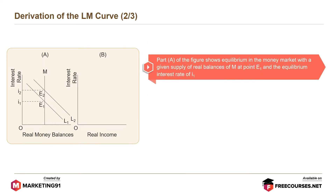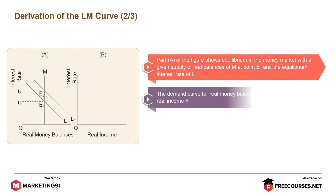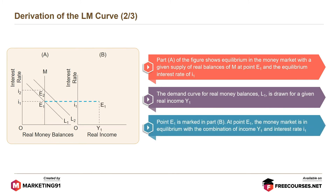Part A of the figure shows equilibrium in the money market with a given supply of real balances M at point E1 and the equilibrium interest rate I1. The demand curve for real money balances, L1, is drawn for a given real income Y1. Point E1 is marked in part B, where the money market is in equilibrium with the combination of income Y1 and interest rate I1.